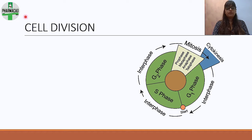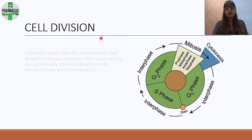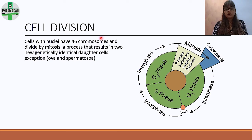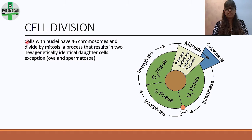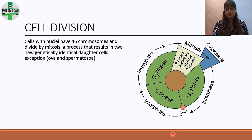Now we come to cell division. We have 46 chromosomes and division occurs through mitosis, which results in two genetically identical daughter cells. This is an important definition — the exception is ova and spermatozoa. The diagram of cell division is also important for you to draw.